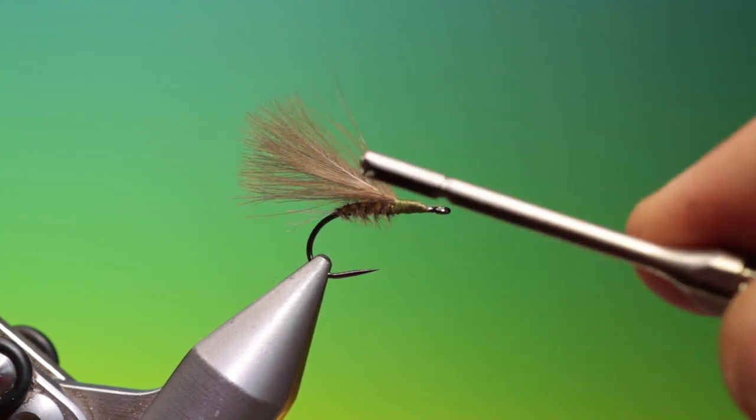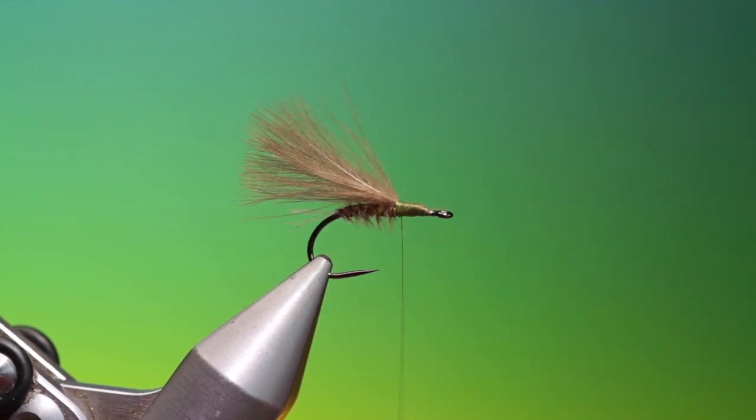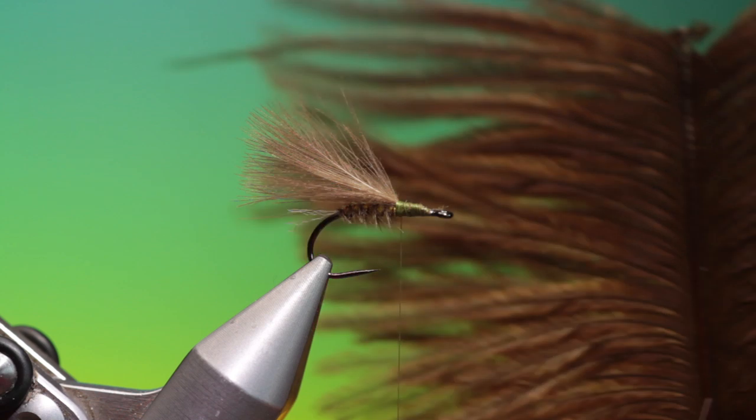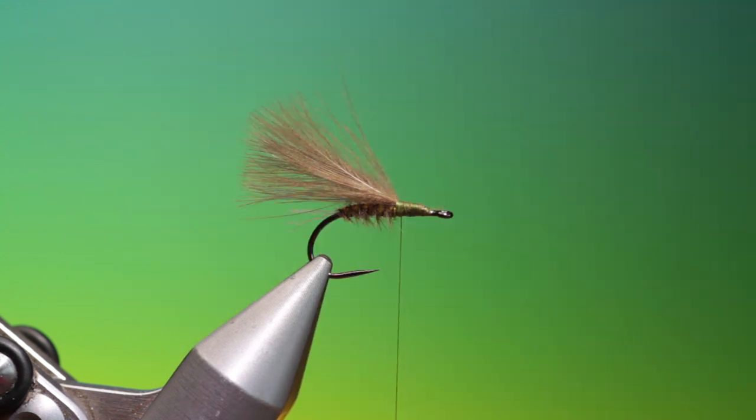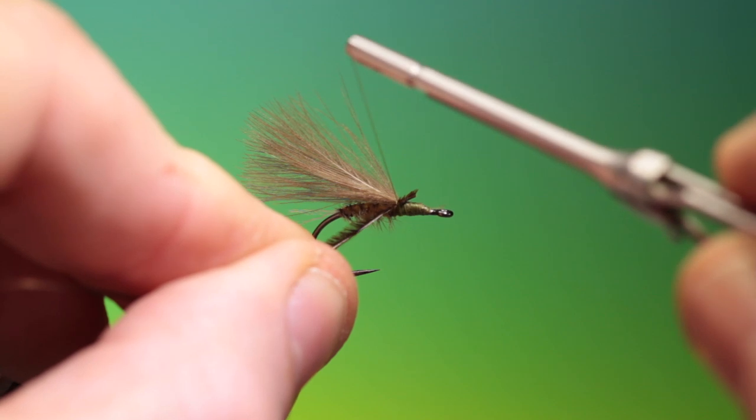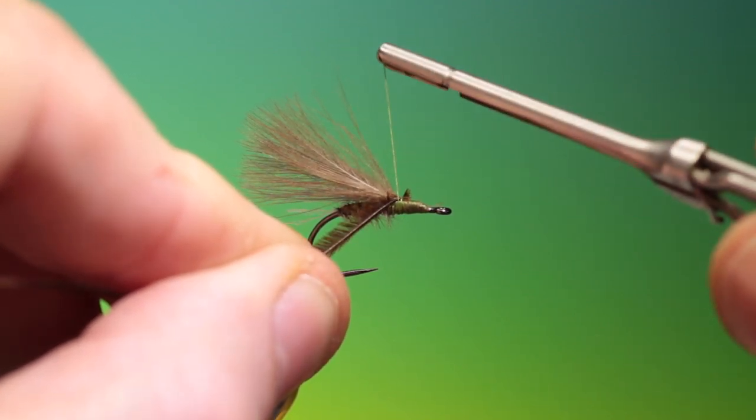And go back into there then we want a brown ostrich curl for the thorax so we just tuck that in there.